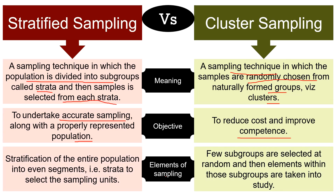Regarding elements of sampling: stratified sampling involves stratification of the entire population into equal segments, i.e. strata, to select sampling units. On the other hand, in cluster sampling a few subgroups are selected at random and then the elements within those subgroups are taken into study.